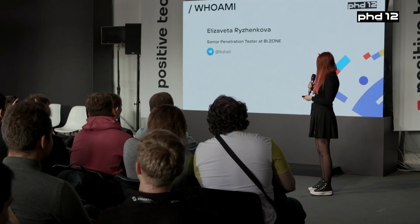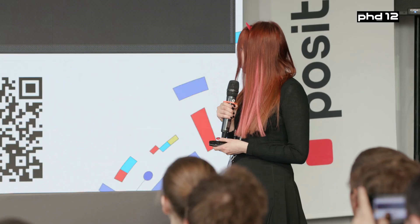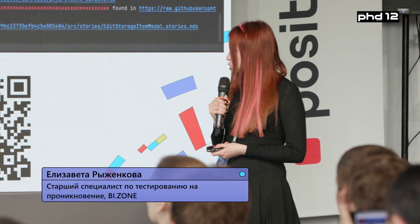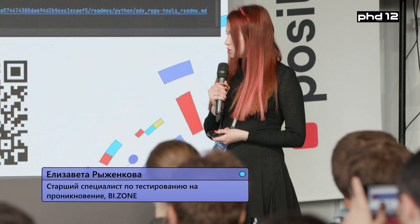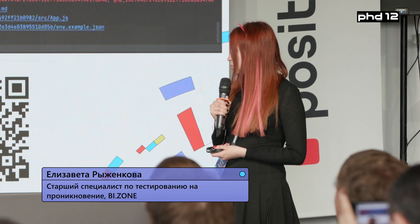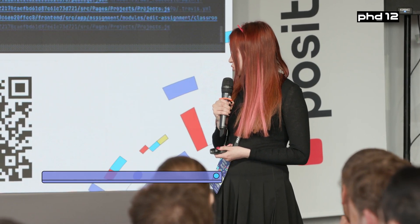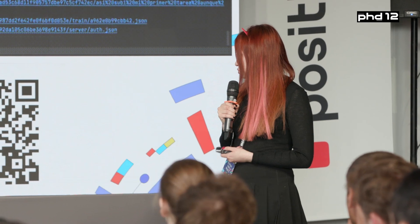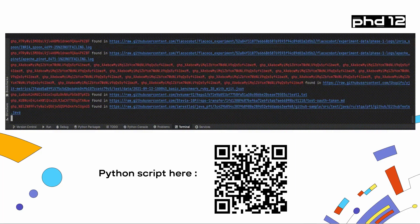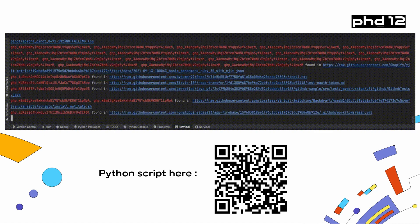I like to look through somebody else's code on GitHub and find access tokens. We can actually crawl the whole GitHub for the presence of this kind of tokens. I have a script, accessible via QR code, about 50 to 60 lines of code — it was pretty simple to write.